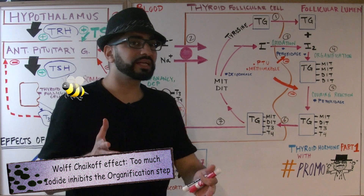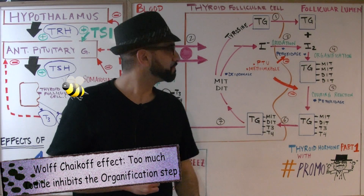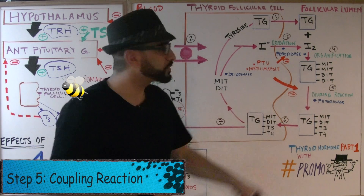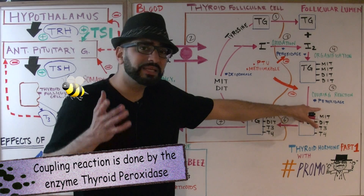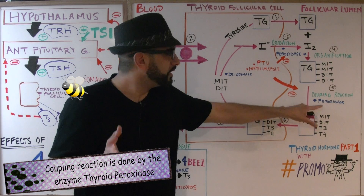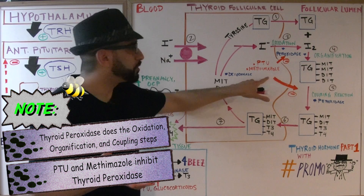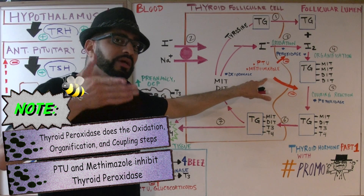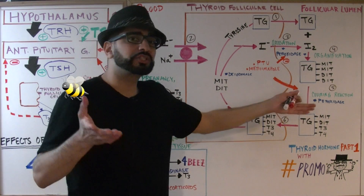Too much iodide inhibiting organification is referred to as the Wolff-Chaikoff effect — we'll discuss that again next week. Step 5 is the coupling reaction, performed by the same enzyme, thyroid peroxidase. Of course, we can use the same medications to inhibit it.